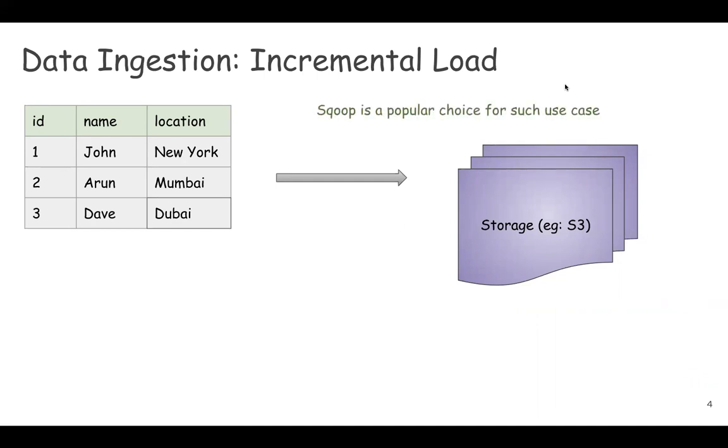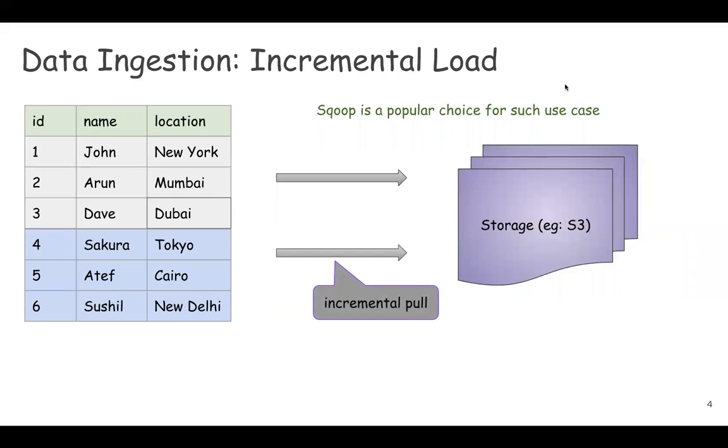And afterwards, if there is a new data coming in RDS, you can do an incremental pull. Let's say, ID up to three has been copied and new data comes in, which has ID higher than three. You can select a specific portion of your database by applying a where clause on the ID and you can avoid full table scan. Scoop is a popular choice for such use cases and it can parallelize your ingestion.